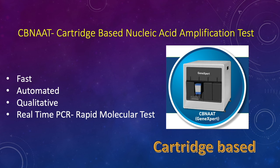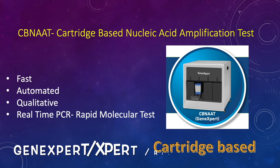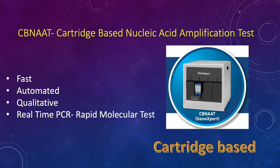Let's start with GeneXpert, or CBNAAT, or Xpert MTB-RIF as we call it. GeneXpert is basically a CBNAAT — a cartridge-based nucleic acid amplification test. It amplifies the nucleic acid or DNA of MTB. The sample is inserted into one cartridge. It is a very fast, automated test which gives us a qualitative result as to whether MTB is detected or not detected. It's a real-time rapid molecular test based on PCR.